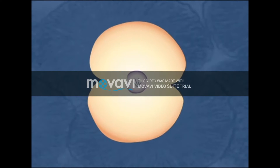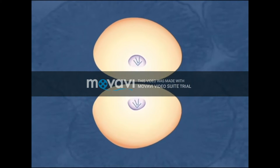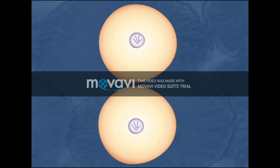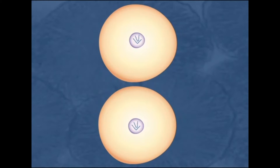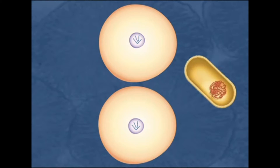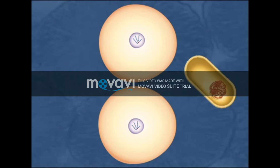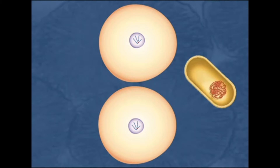Archaebacteria have even challenged scientists' ideas about how to define a species, since they practice a lot of horizontal gene transfer, where genes are transferred from one individual to another during their lifetimes, making it difficult to determine how closely different cells are related, or even if archaebacteria cells have the sort of stable combinations of traits that scientists typically use to define a species.